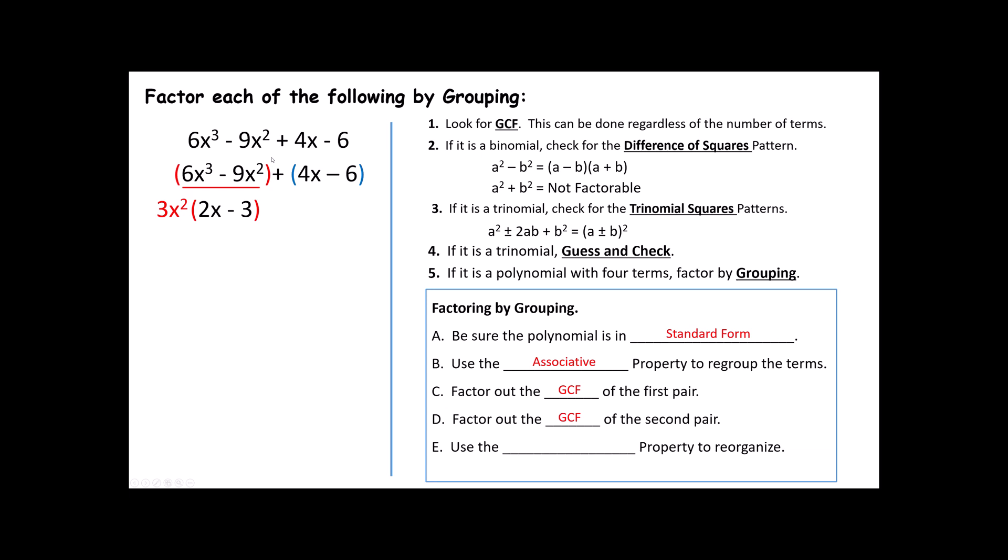I'm then going to go through and factor out the GCF of the second pair. Notice you have a 4x and you have a 6. We're looking for things they have in common. Both of these have a 2. And when I pull out a 2, 2 times 2x makes 4x. 2 times -3 gives me the -6.